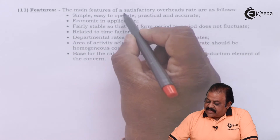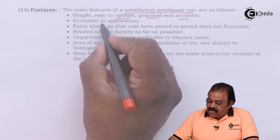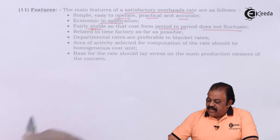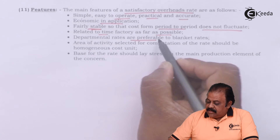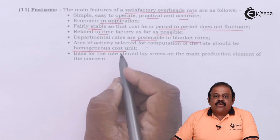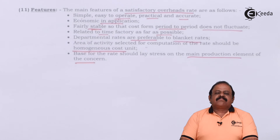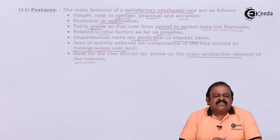The main features of a satisfactory overhead rate are: it should be simple and easy to operate, practical and accurate, and economic in application. It should be fairly stable so that cost does not fluctuate from period to period, and related to the time factor as far as possible. Departmental rates are preferable to blanket rates, and the base for the rate should reflect the main production element of the concern. An organization must select the method most suitable for its production processes and products.